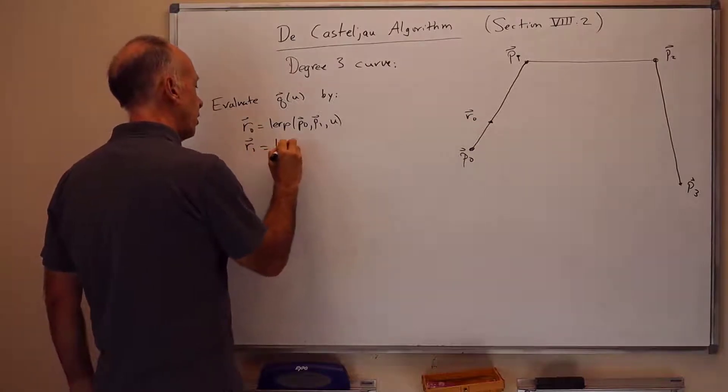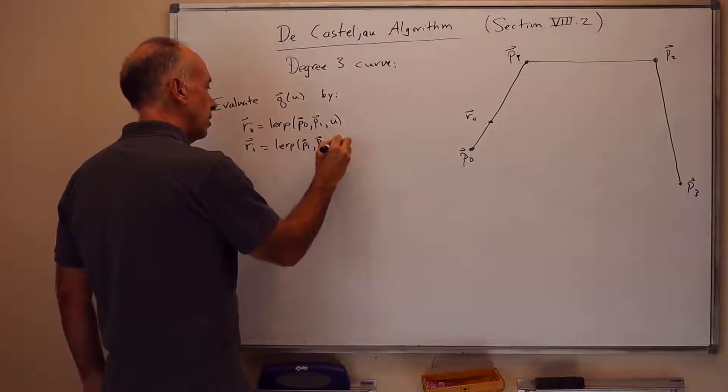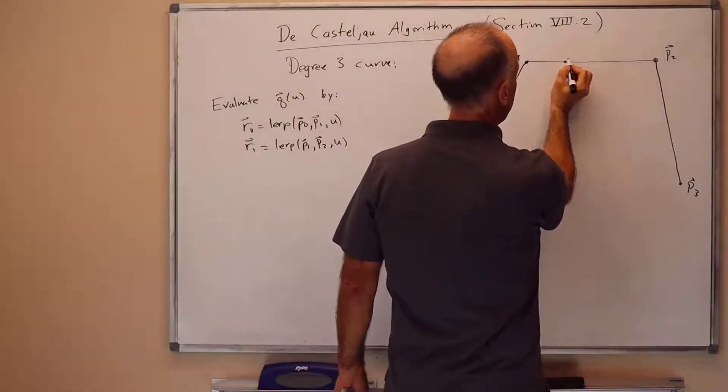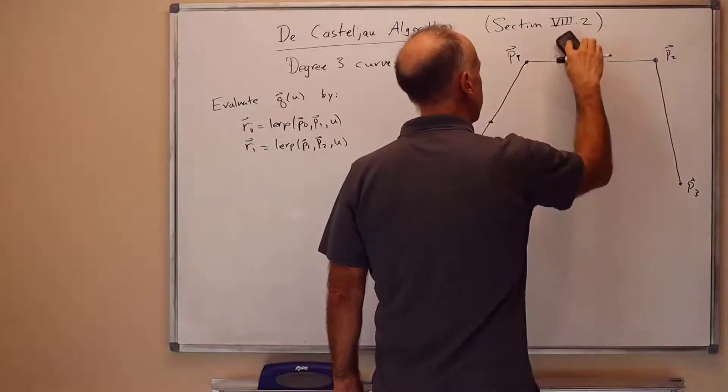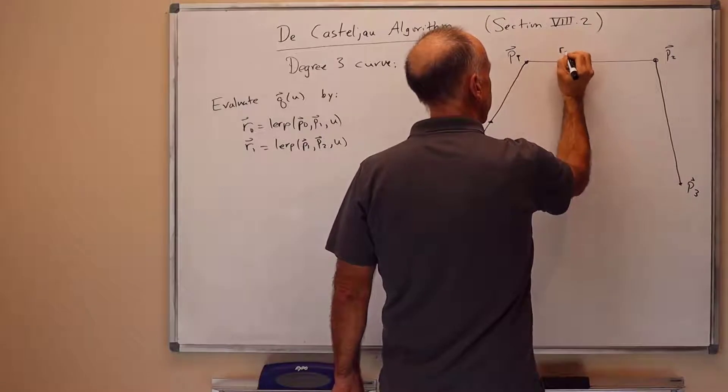And then we lerp also from P1 to P2, again by fraction U. So now we're going fraction U of the way from P1 to P2, and that is R1.